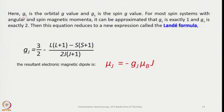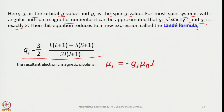In this expression, G_L is the orbital G value and G_S is the spin G value. For most spin systems, G_L ≈ 1 and G_S ≈ 2, which reduces the equation to the Landé formula: G_J = 3/2 − [L(L+1) − S(S+1)] / [2J(J+1)]. The resultant electronic magnetic dipole is then μ_J = −G_J μ_B J.